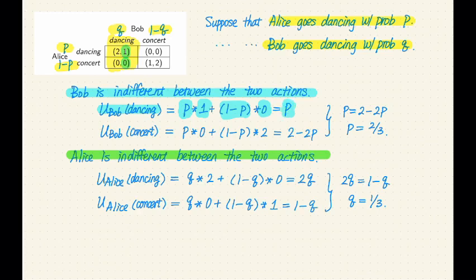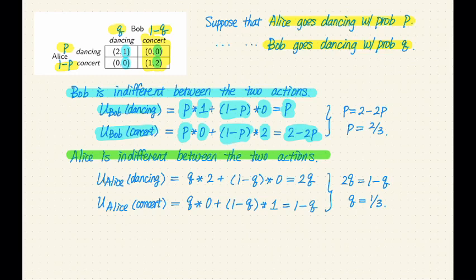For concert, we look at the right column. With probability P, Alice goes dancing, and Bob gets a utility of 0. With probability 1 minus P, Alice goes to a concert and Bob gets a utility of 2. So the total is 2 minus 2P. Equating these two together, we get P equals two-thirds. All we have to do is look in the utility matrix, find the right numbers, calculate the expected utility, equate them, and derive the probability.